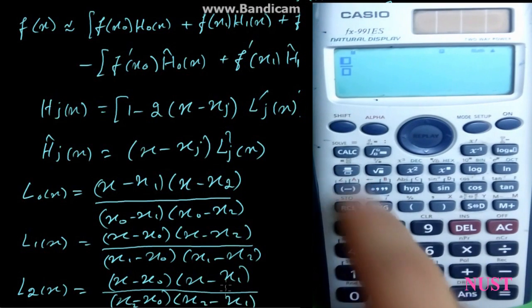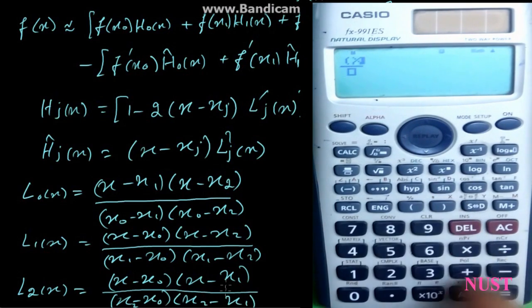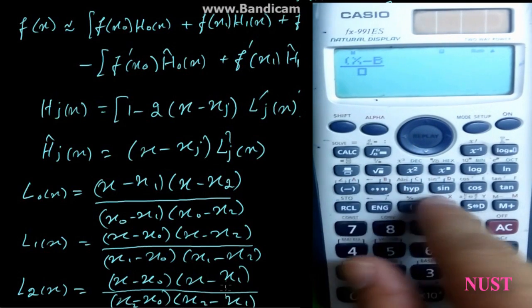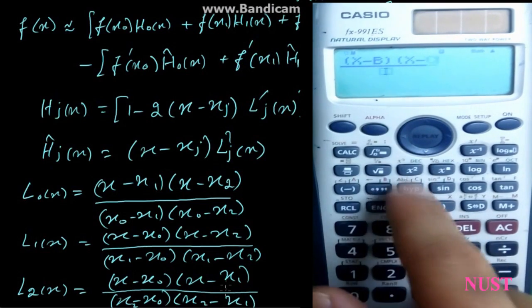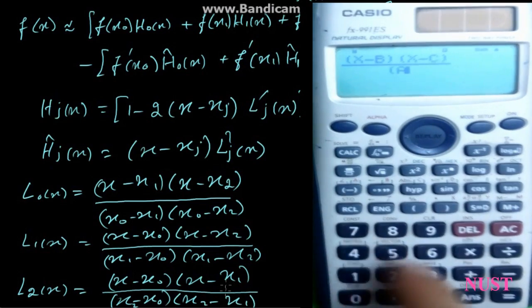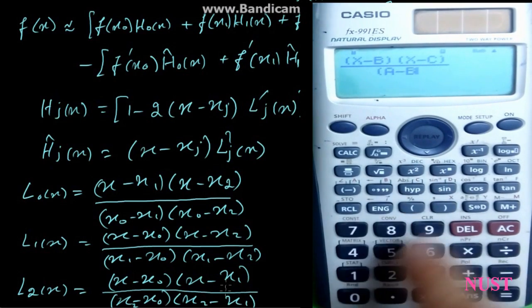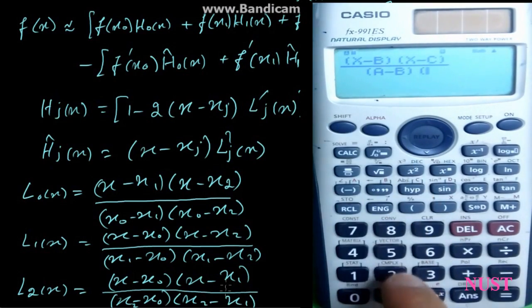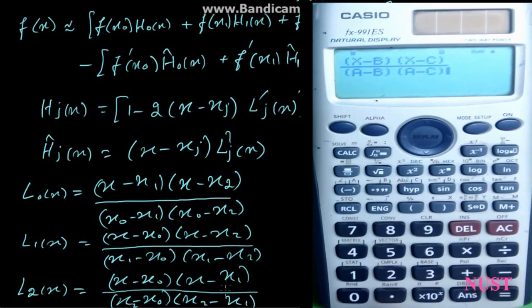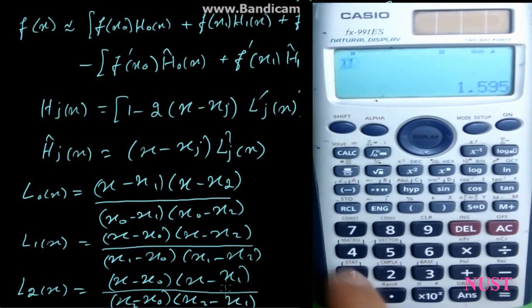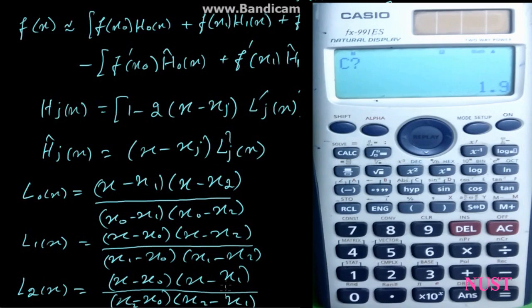Now first of all, find the L function and write the equation for it as (x minus b)(x minus c) divided by (a minus b)(a minus c). Enter the value of x as 1.5, since we want to interpolate the function at 1.5. Enter b as 1.6 and c as 1.9, and a as 1.3. We get L0 equal to 2 over 9.